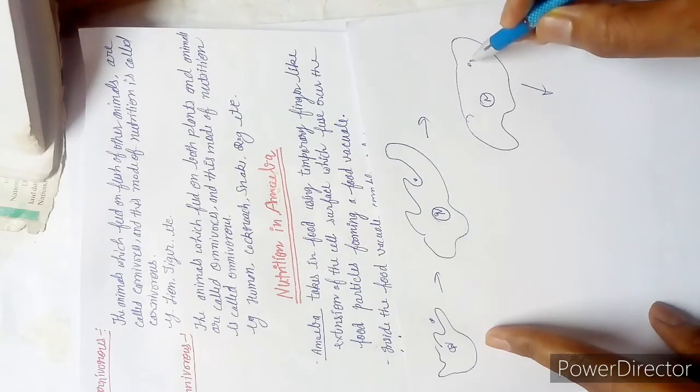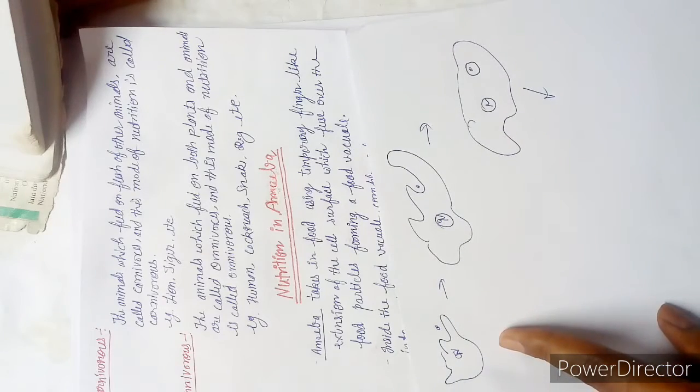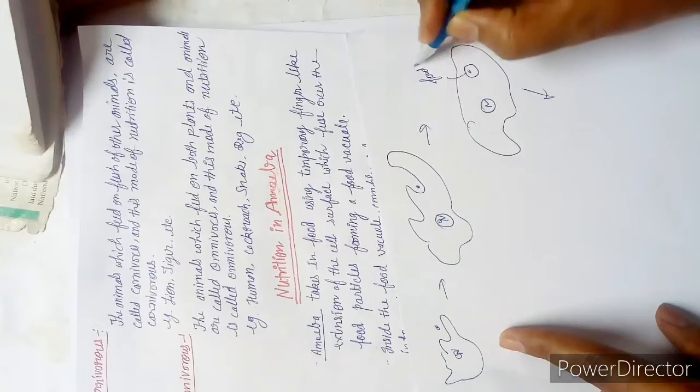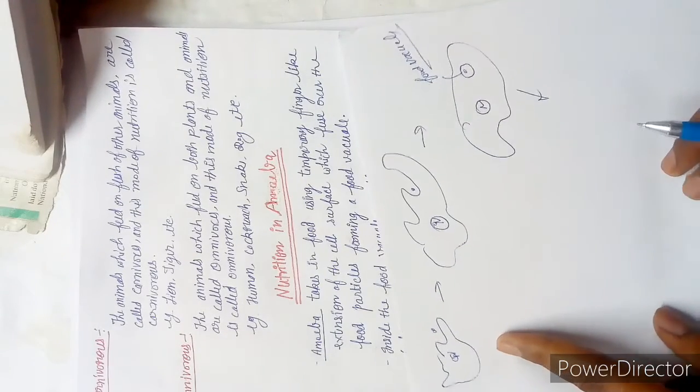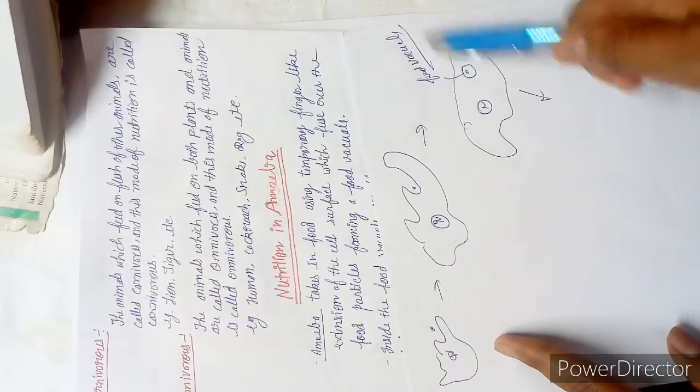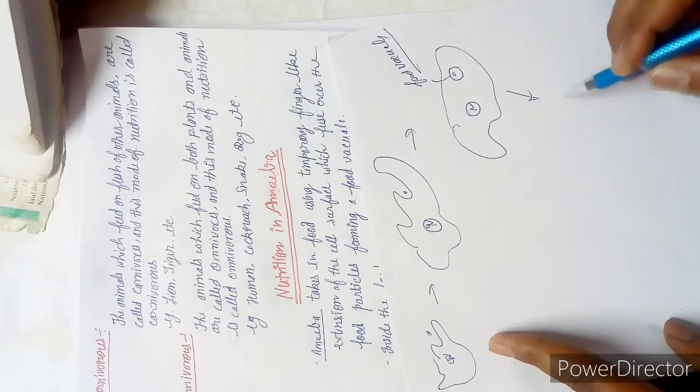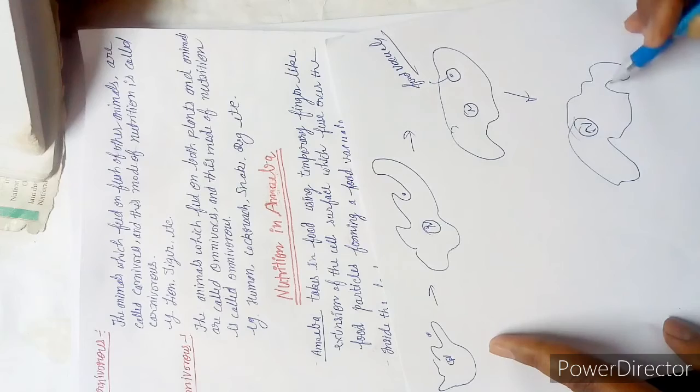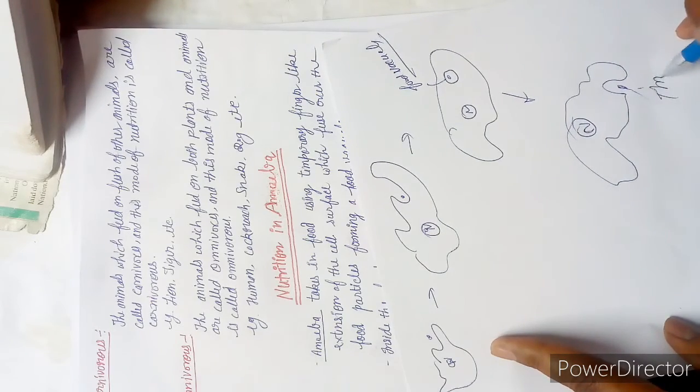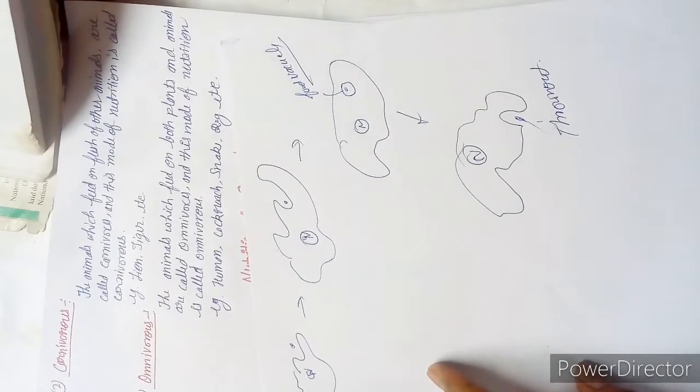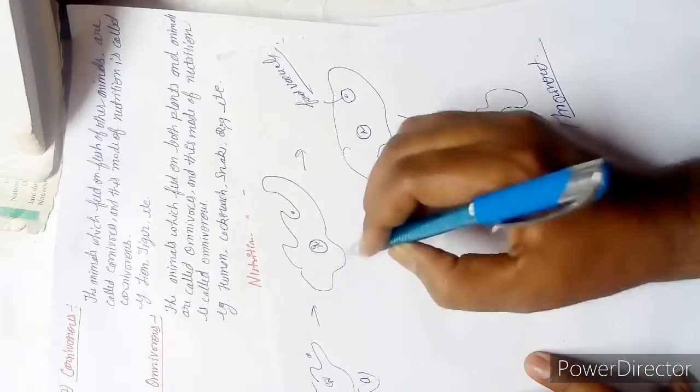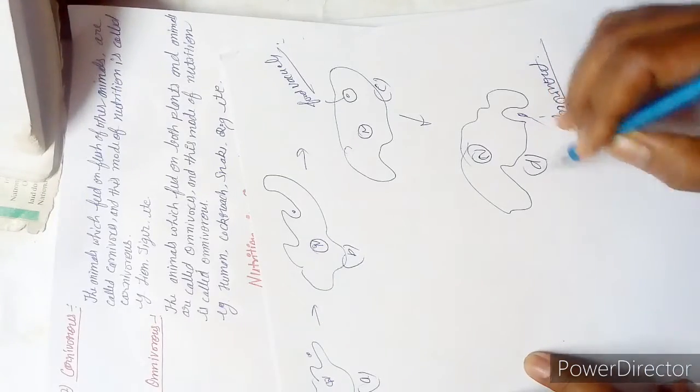In the next diagram the food particle is there, the nucleus is there. After digestion there is a food vacuole. In plant cells I have talked about food vacuoles also. After some time, this food particle is ejected and thrown out. This is the whole process, steps A, B, C, and D. The same diagram is given in your NCERT book.